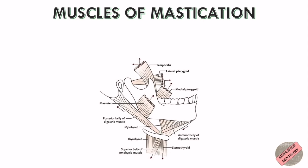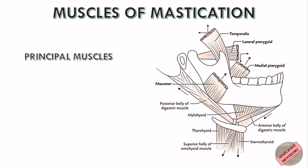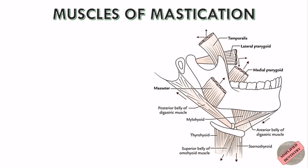First, let's know what are the muscles of mastication. These muscles are divided into two groups: the principal muscles, which are the main group that help in mastication, and the accessory muscles. The principal muscles of mastication are temporalis, masseter, lateral pterygoid, and medial pterygoid.